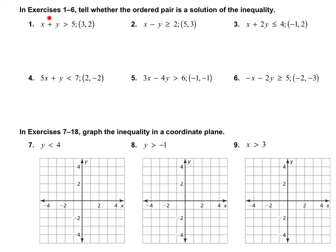On exercises one through six, we need to tell whether the ordered pair is a solution of the inequality by substituting in x and y. On number one, x is 3 and y is 2, so 3 plus 2 is greater than 5. Five is greater than five is false because it's actually equal. So this point is not a solution of that inequality.